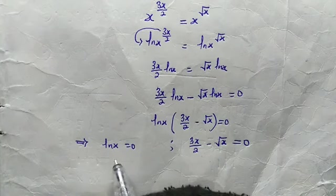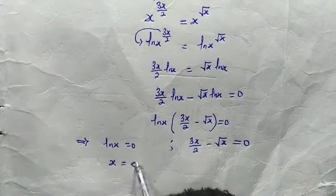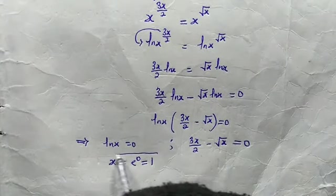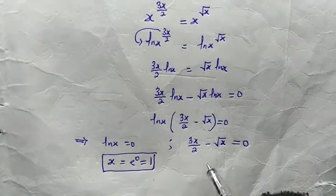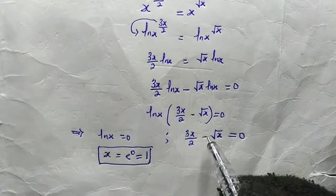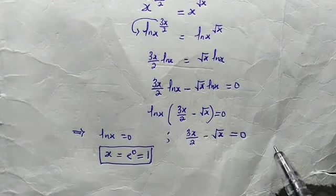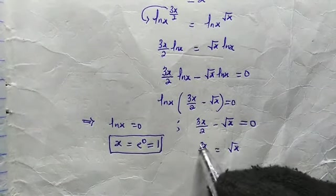This implies that the natural log of x equals 0, and also that 3x over 2 minus root x equals 0. From the first equation, x equals e to the power of 0, which gives us 1. So we have arrived at the solution x equals 1. From the second equation, root x crosses over, giving us 3x over 2 equals root x.